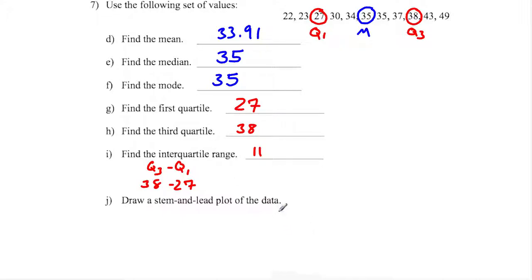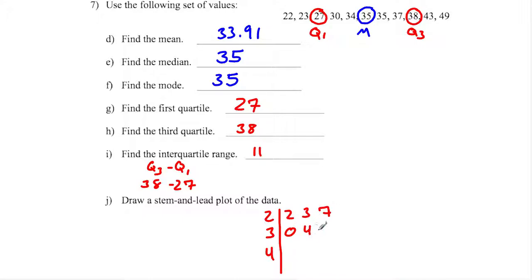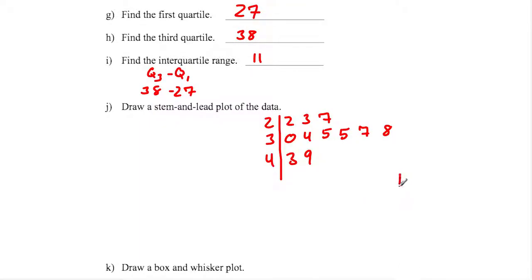For the stem and leaf plot, I draw a branch and have stems 2, 3, and 4. The 2 represents the 20s, so I have 22, 23, and 27. For the 30s I have 30, 34, 35, 35, 37, and 38. For the 40s I have 43 and 49. I definitely need a key — that shows that 2|2 equals 22, and 4|9 equals 49.